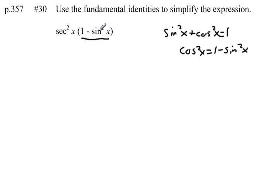So anytime I see 1 minus sine squared or even 1 minus cosine squared, I should think of this identity, and we can make this substitution right here. 1 minus sine squared of x is equal to cosine squared of x, so I can write this as secant squared of x times cosine squared of x.